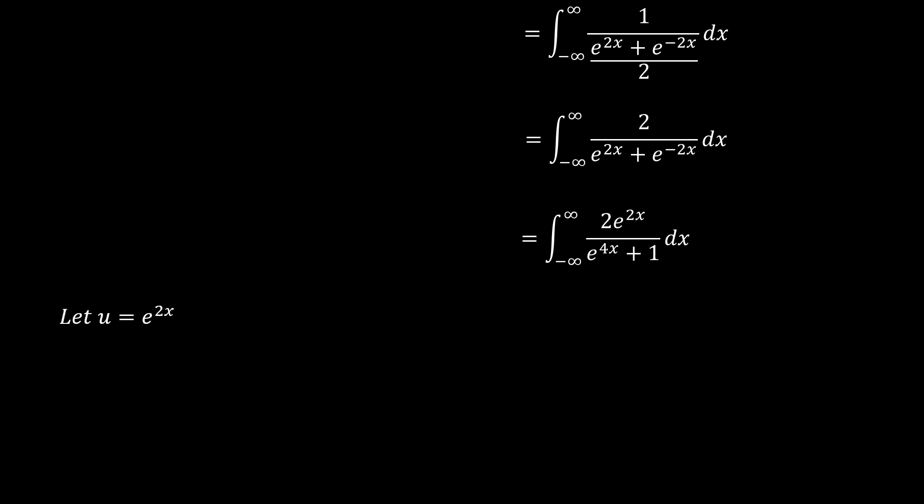So if we let u to be equal to e^(2x), then the derivative of that, du/dx, is the same as 2e^(2x), and so du can be substituted for 2e^(2x) dx. Now the limits here, using this as x tends to negative infinity, u would tend to e^(-∞) which is 0.